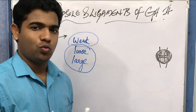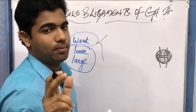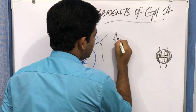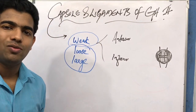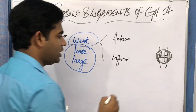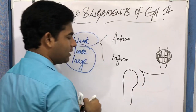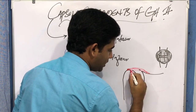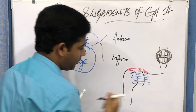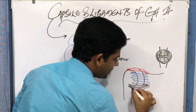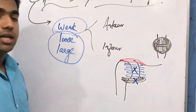The capsule is not weak in all directions — it is weak specifically in two directions: anteriorly and inferiorly. These are the directions in which you see dislocations or subluxation of the glenohumeral joint. The capsule lines the superior, anterior, inferior, and posterior aspects, but it is weak in the anterior and inferior directions.